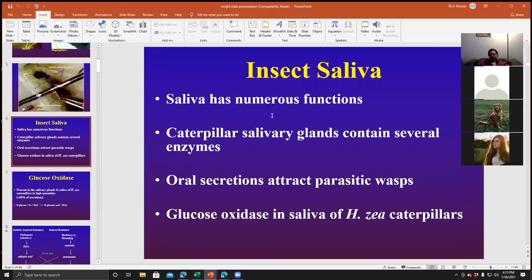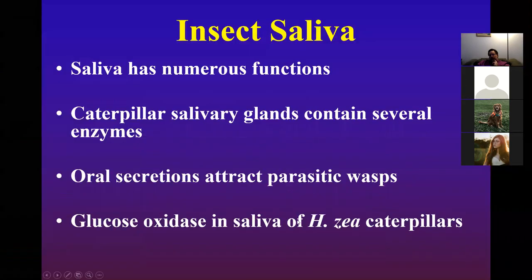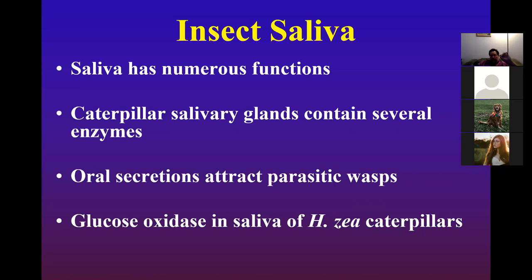We mentioned how saliva can have lots of functions, just like it does in us — it helps us digest a meal. But it also can help caterpillars make silk. Sometimes it can actually give them away, because the oral secretions can tell the plant it's dealing with a particular pest problem. In doing so, they might stimulate direct defenses or indirect defenses, when they attract a parasitic wasp or predator to attack. Plants can give off an SOS signal through volatiles.